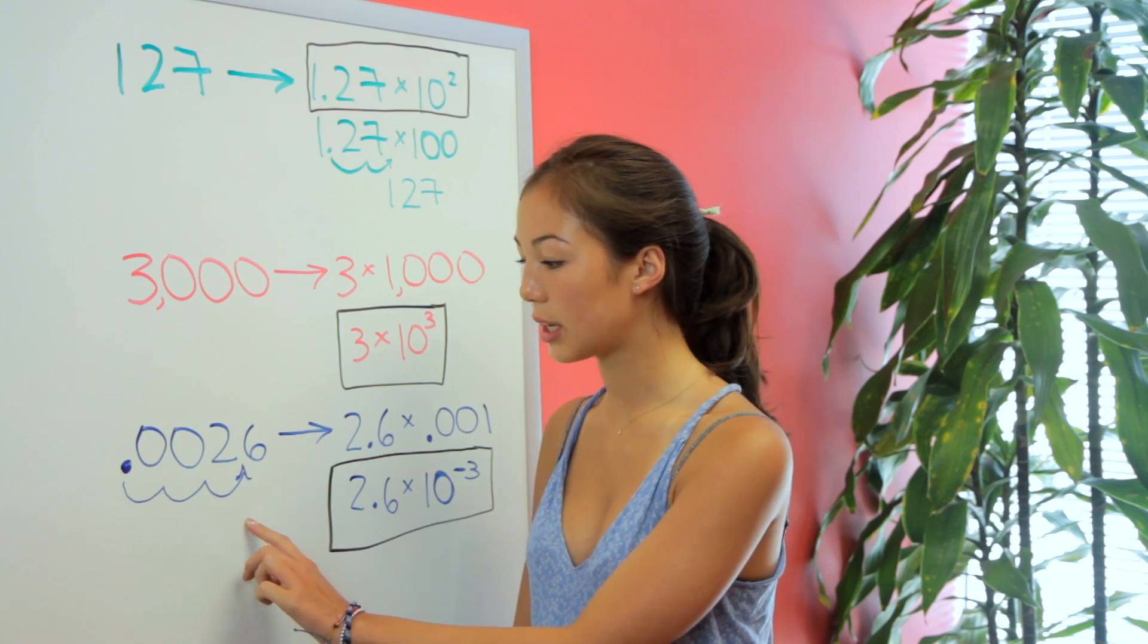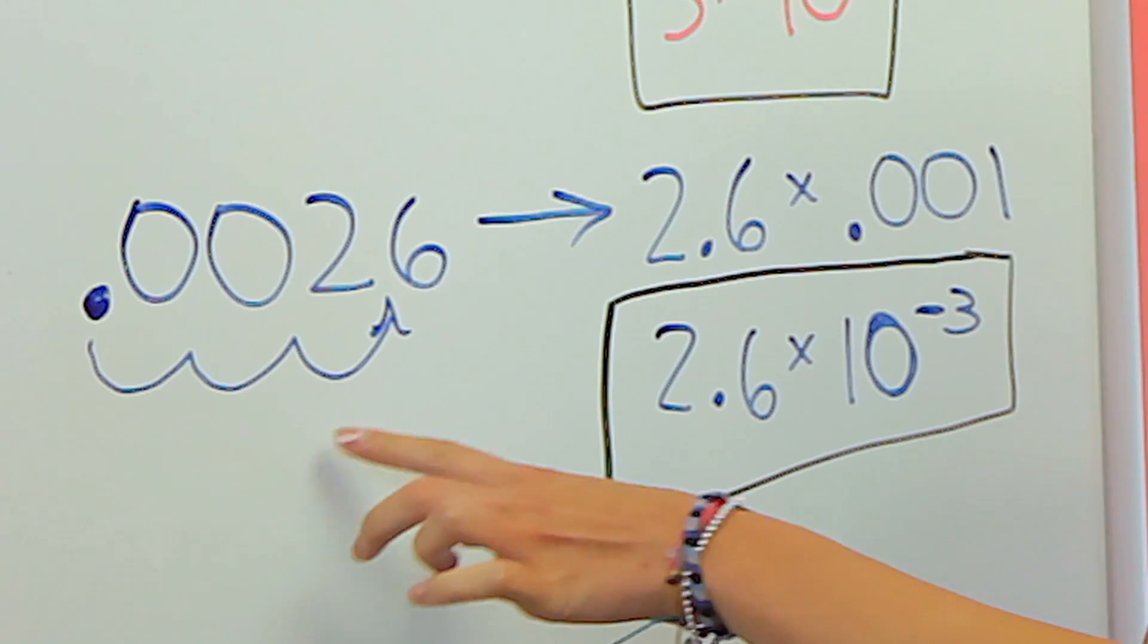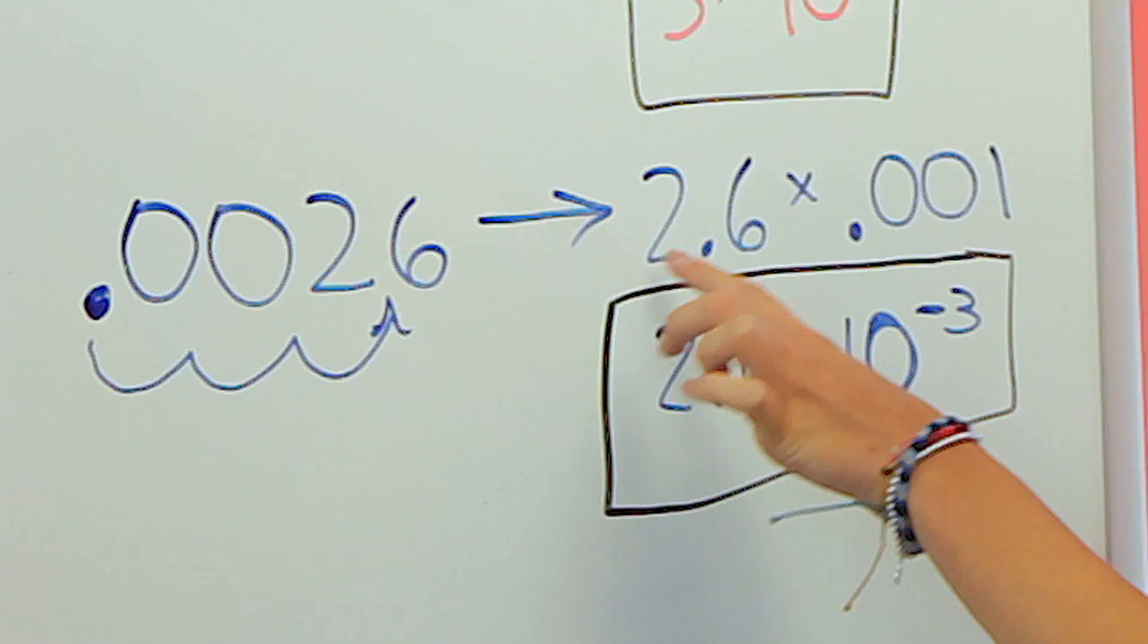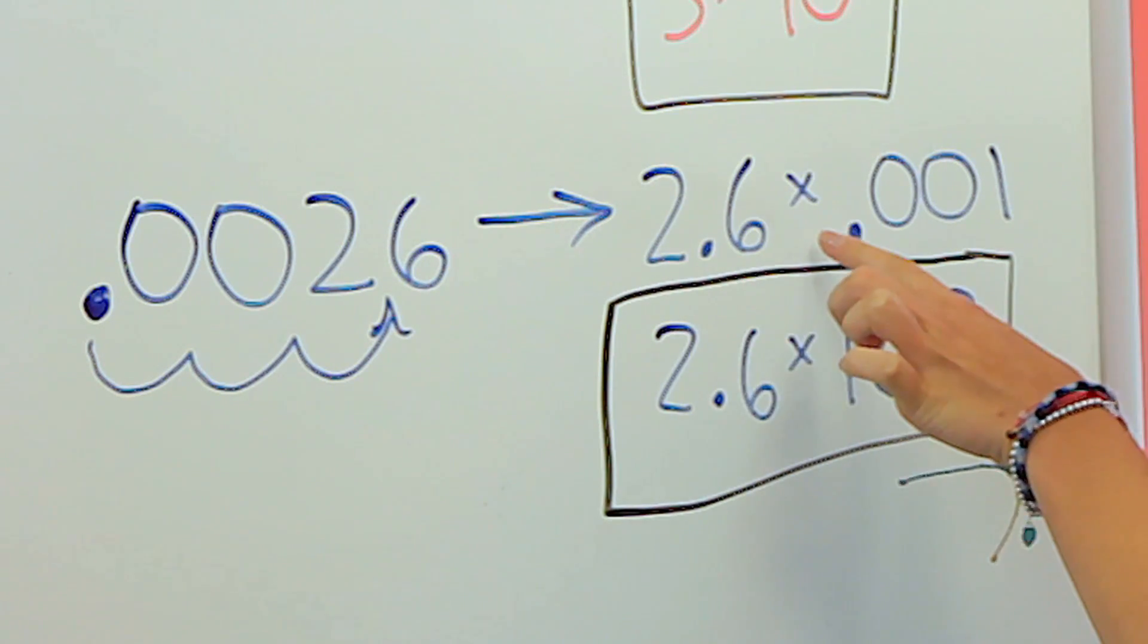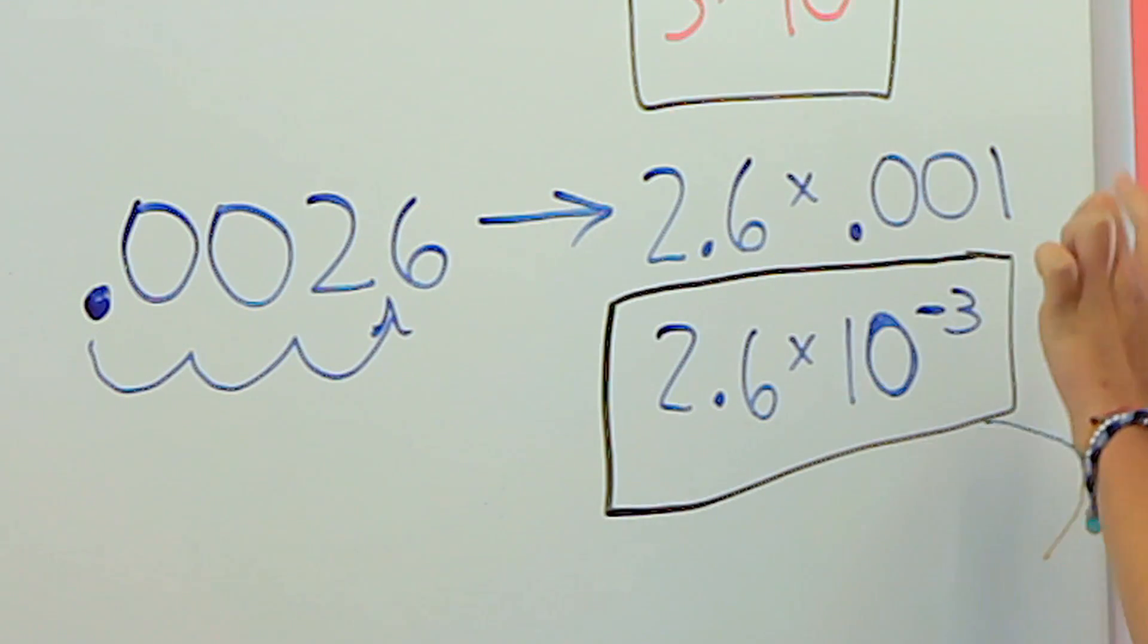We can also do the same thing with the decimal. So here we have 0.0026, and this is going to be the same as 2.6 times, move the decimal over, 0.001.